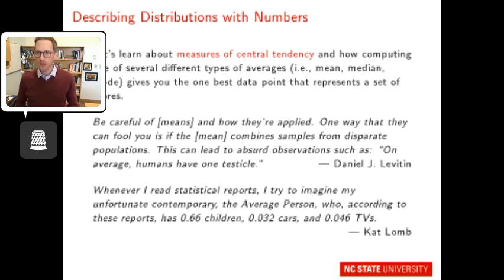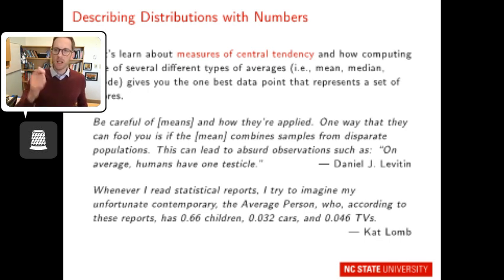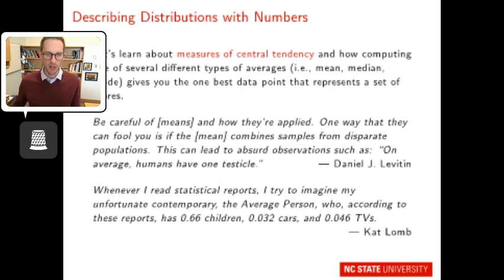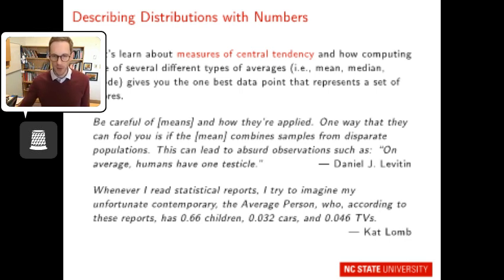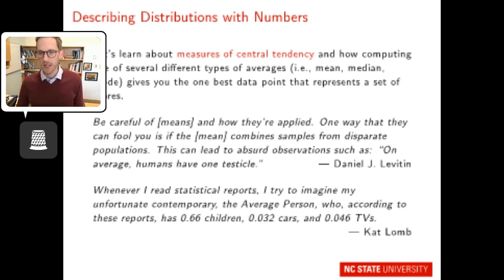Measures of central tendency give us a sense of a set of scores or a quantitative variable. I love these two quotes: 'Be careful of means and how they're applied. One way they can fool you is if the mean combines samples from disparate populations — leading to observations such as on average, humans have one testicle.' Or: 'Whenever I read statistical reports, I try to imagine the average person who has 0.66 children, 0.032 cars, and 0.046 TVs.' The idea is to understand these measures of central tendency carefully.